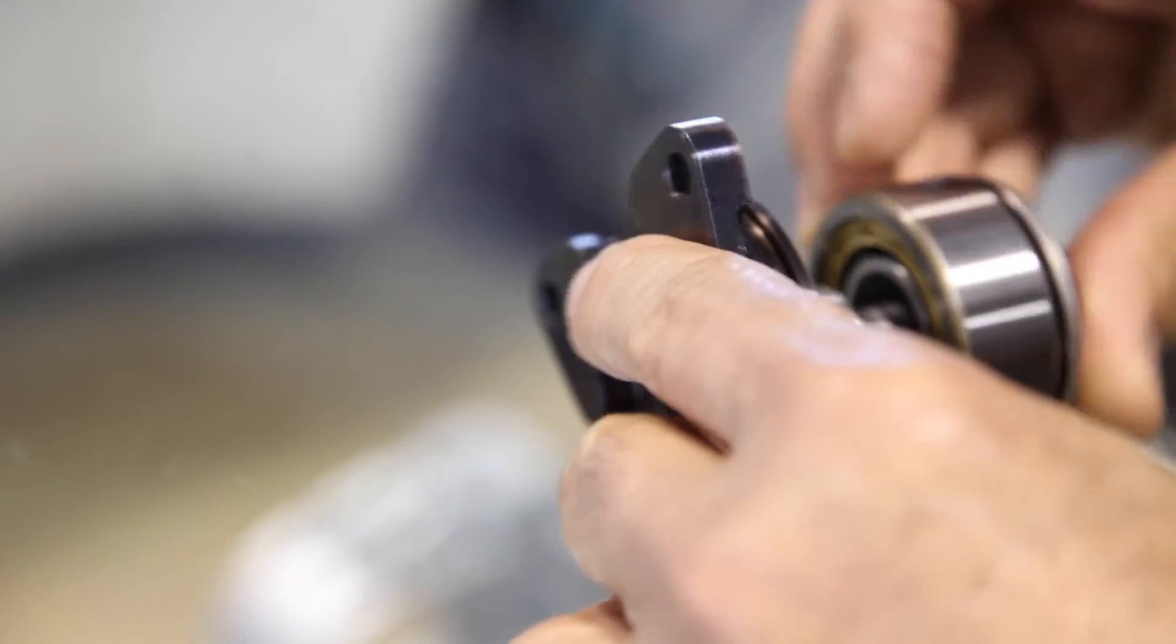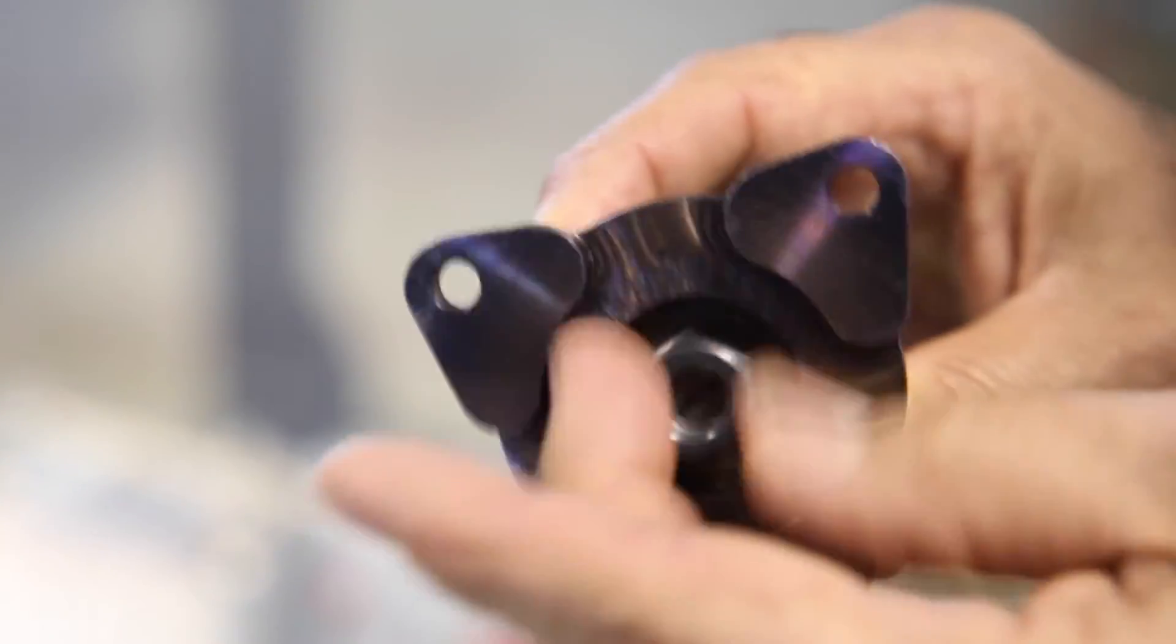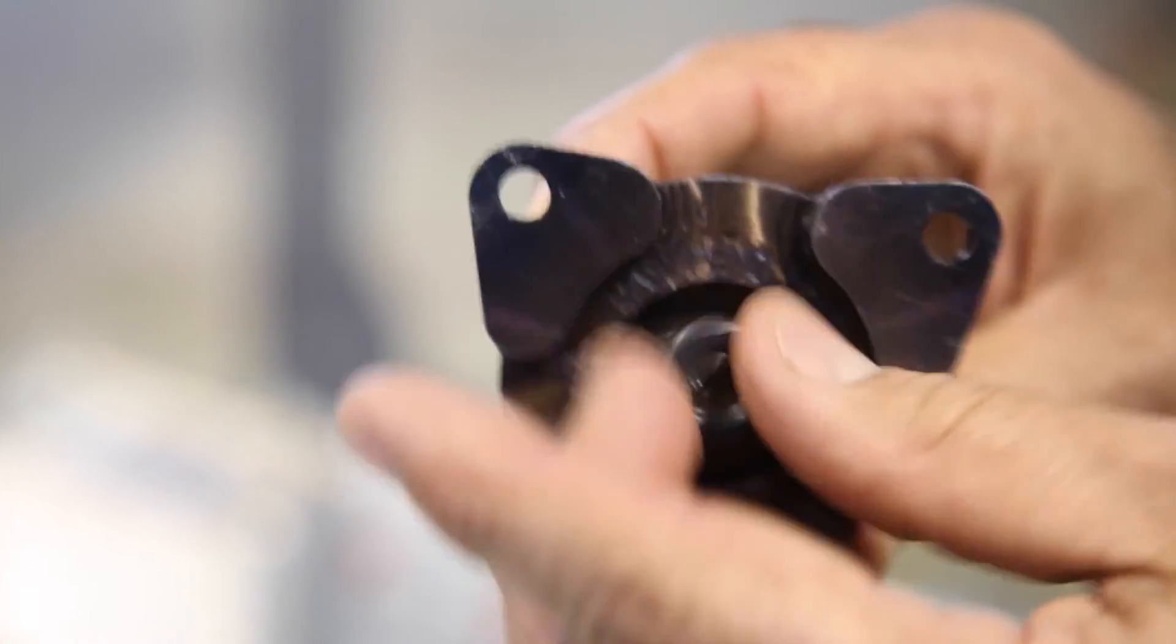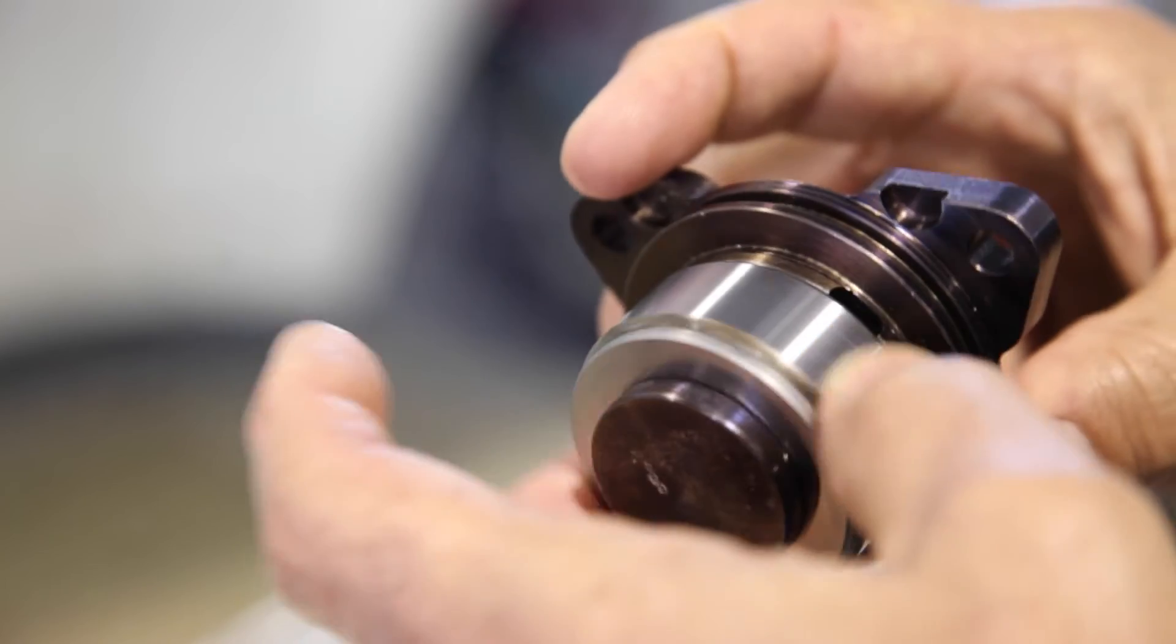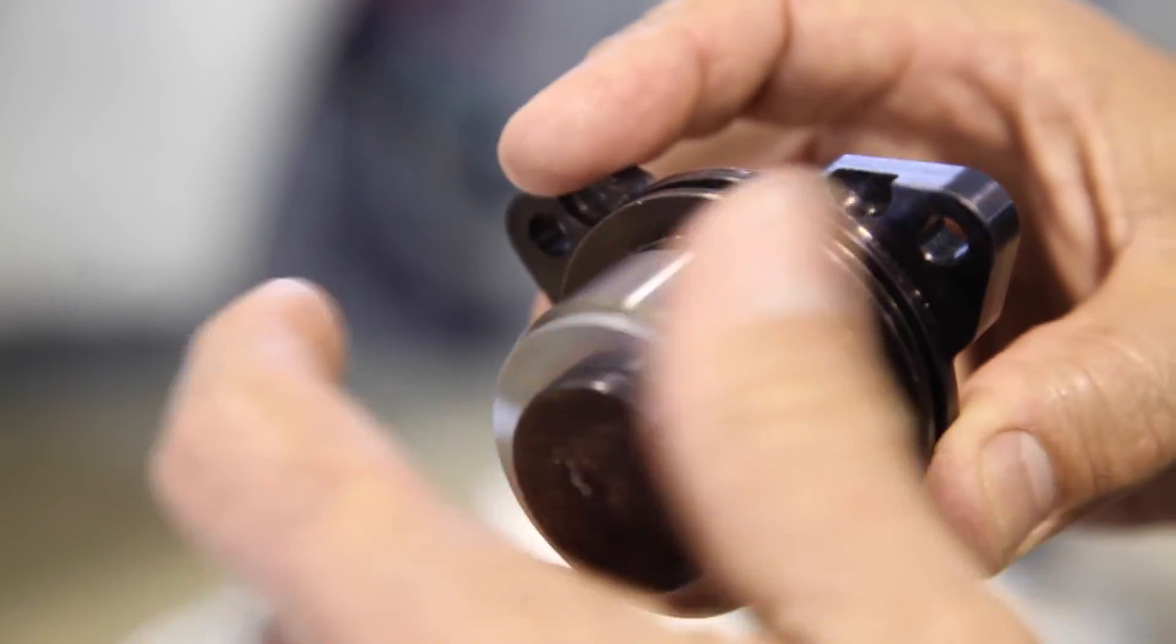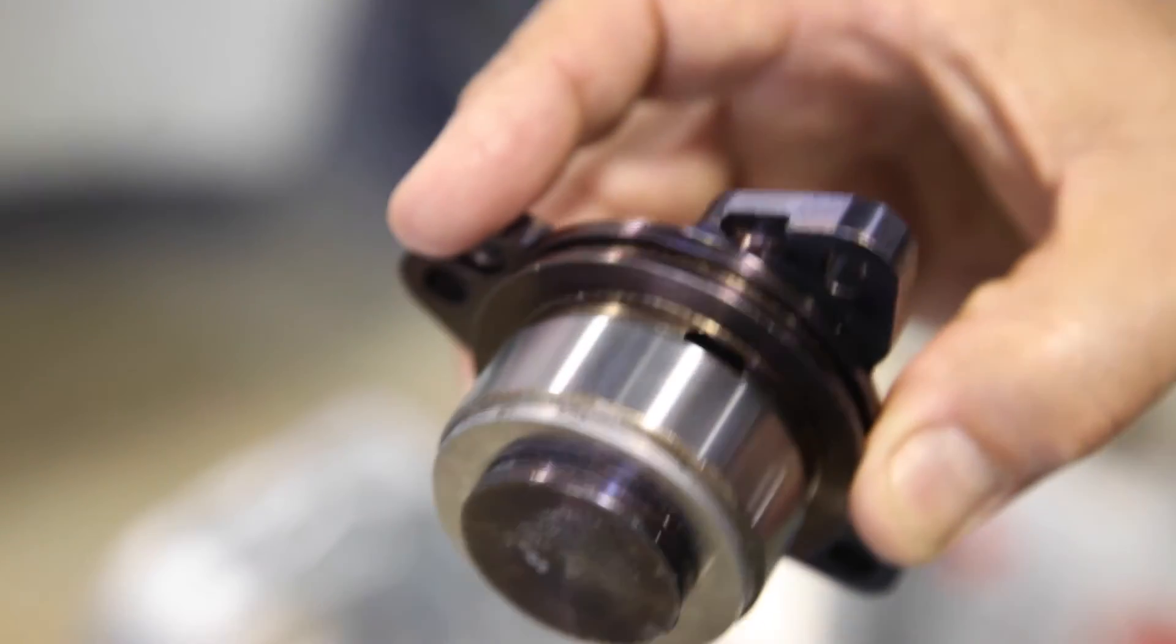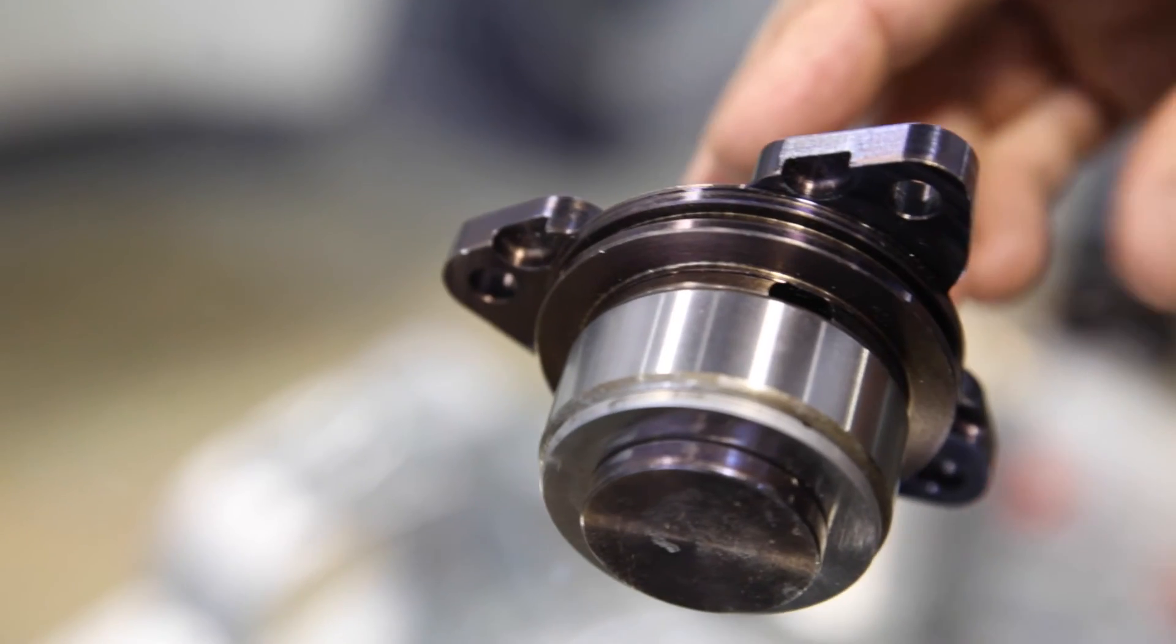This type of bearing will have five times the load bearing capability compared to a ball bearing. All bearings do not compare in their ability to hold load like a cylindrical roller, and that's why we are using this bearing for the problematic IMS solution to the Boxster and the 996 engine.